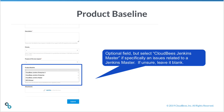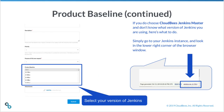The product baseline is an optional field. Select CloudBees Jenkins master if the issue specifically relates to the Jenkins master. If unsure, leave it blank. If you choose CloudBees Jenkins master and don't know what version of Jenkins you're using, simply go to your Jenkins instance and look in the lower right corner of the browser window as indicated by the graphic.